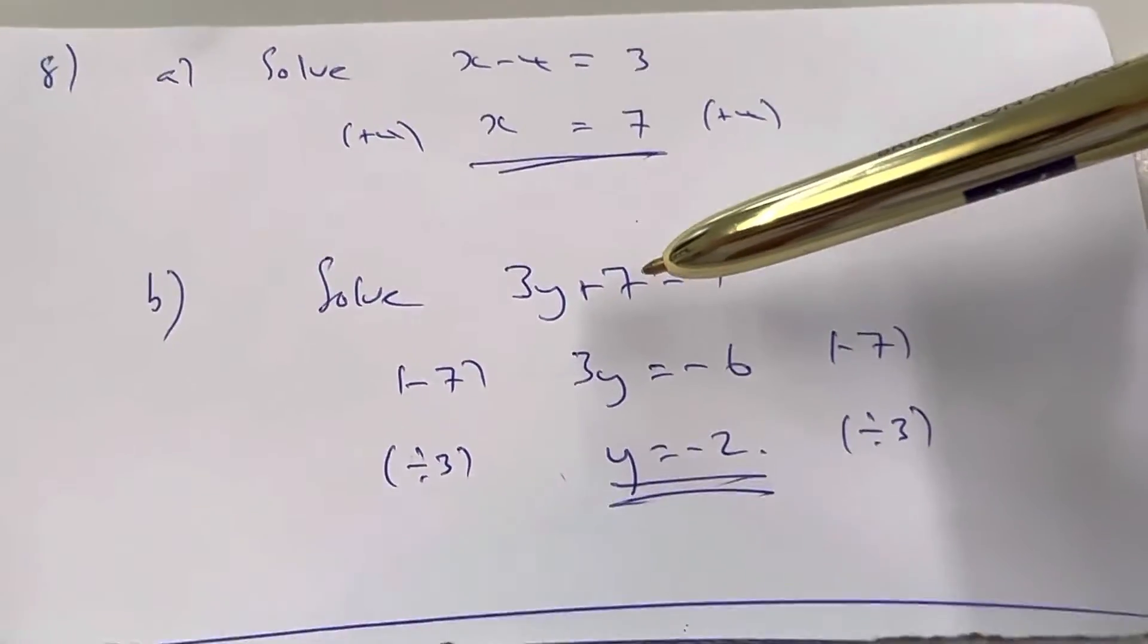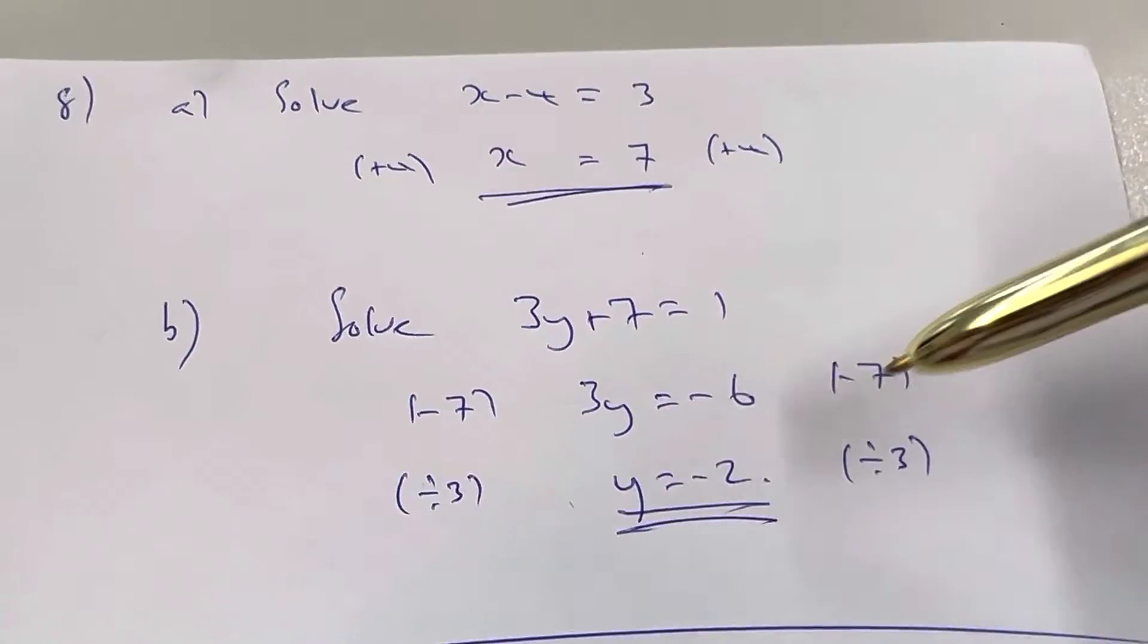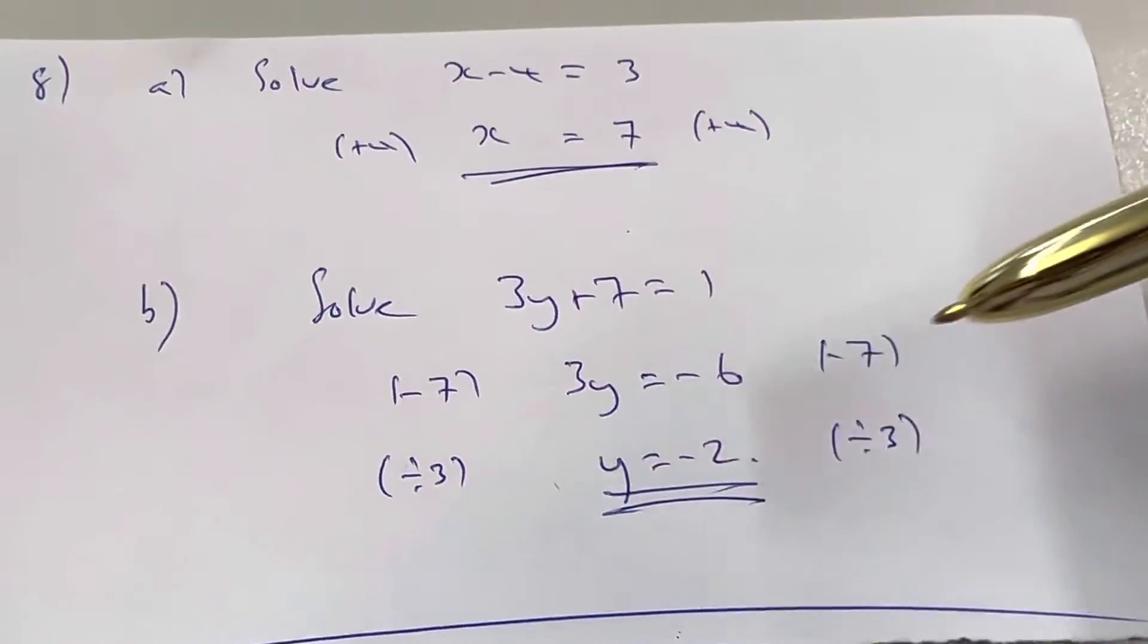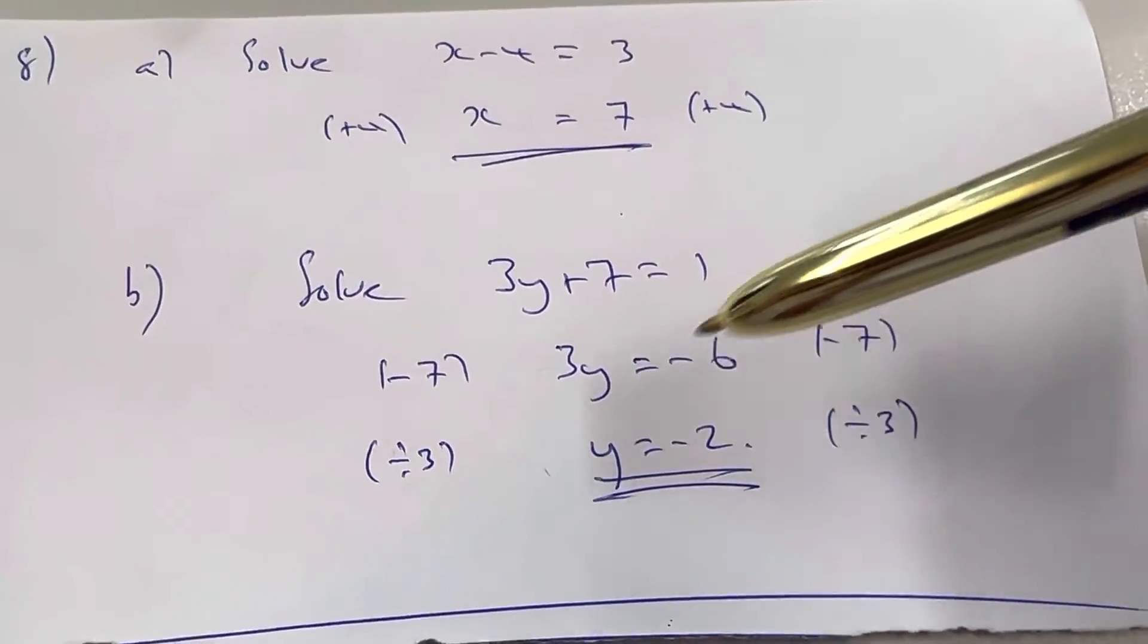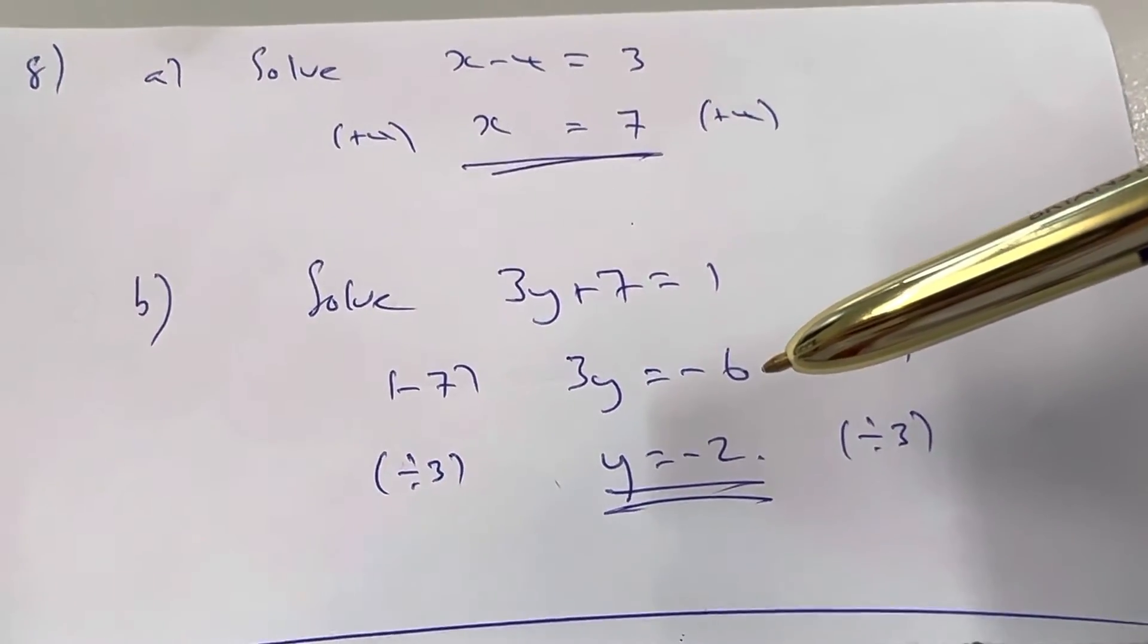Firstly, undo the plus 7 by minusing 7. Again, notice how I lay it out, minus 7 on both sides, what I'm going to do. On the left side, the plus 7 will disappear to leave you 3y. On the right side, you will get minus 6.